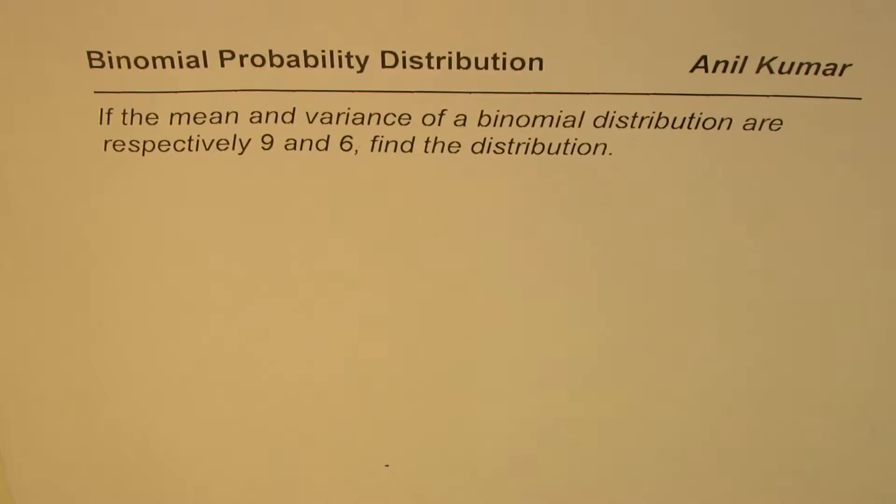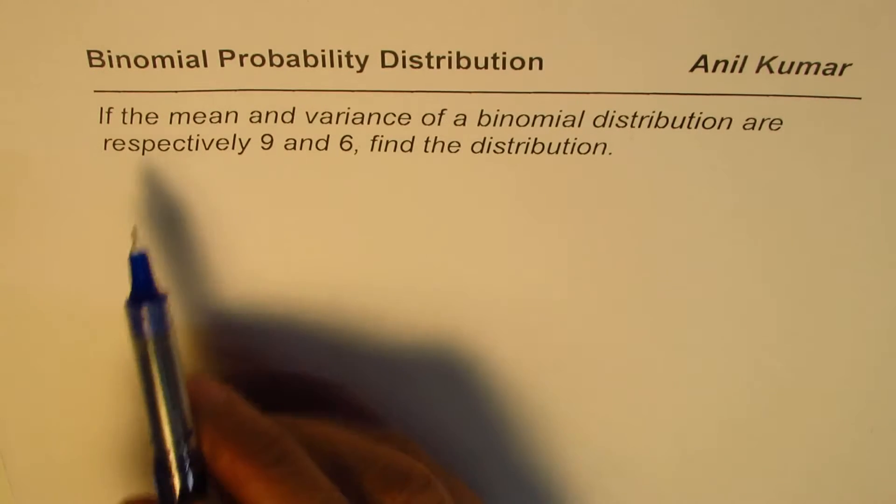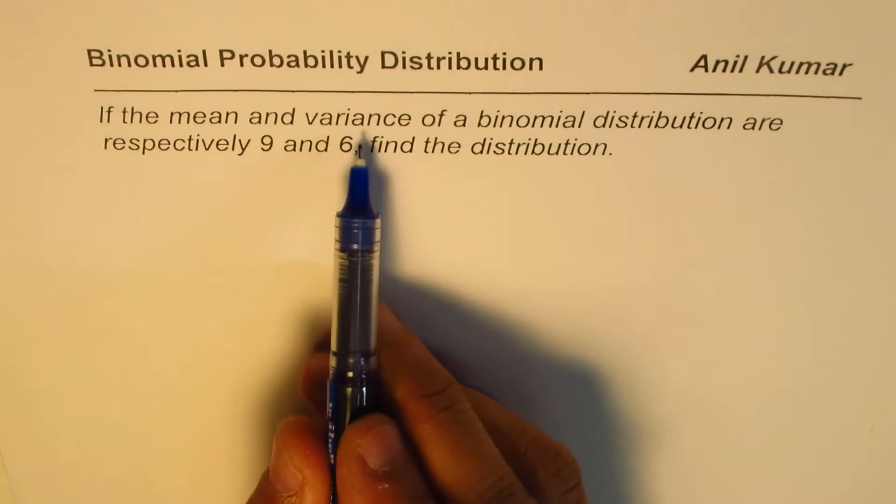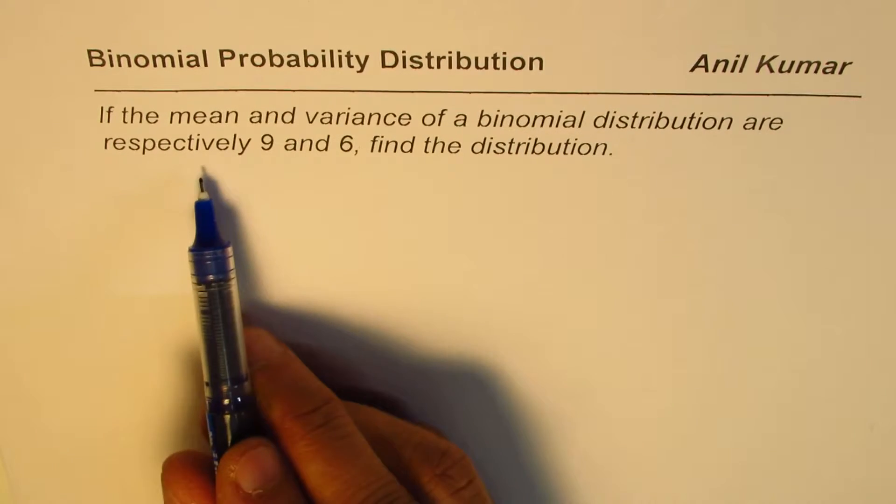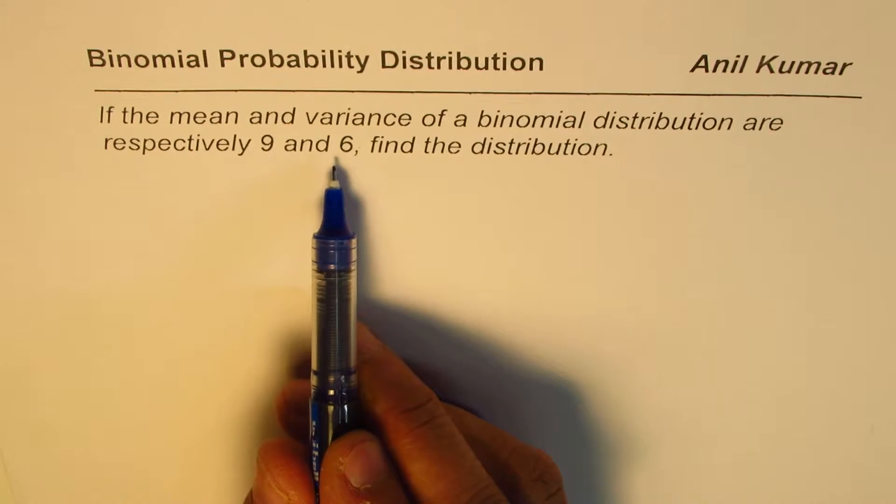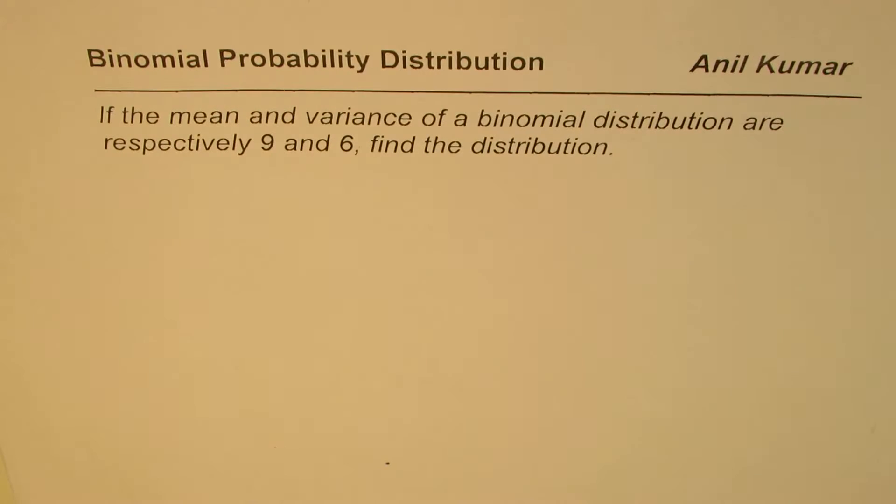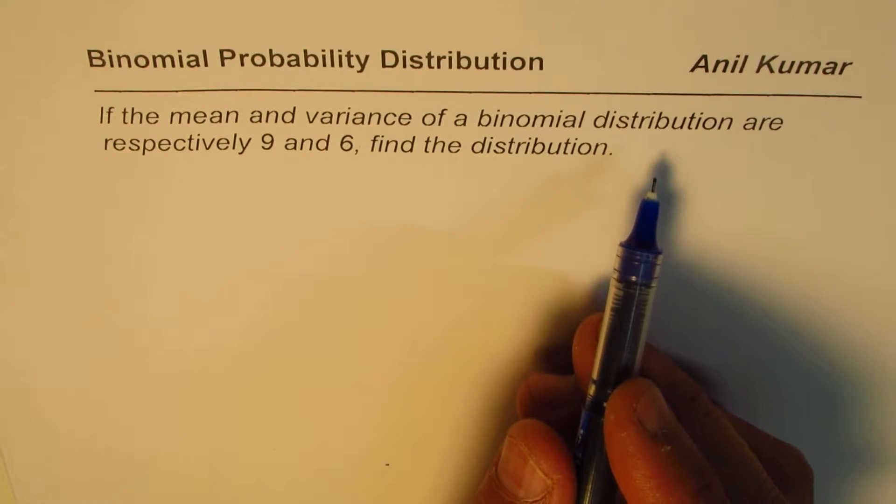I'm Anil Kumar sharing with you a few practice questions on binomial probability distribution. The question here is: if the mean and variance of a binomial distribution are respectively 9 and 6, find the distribution.